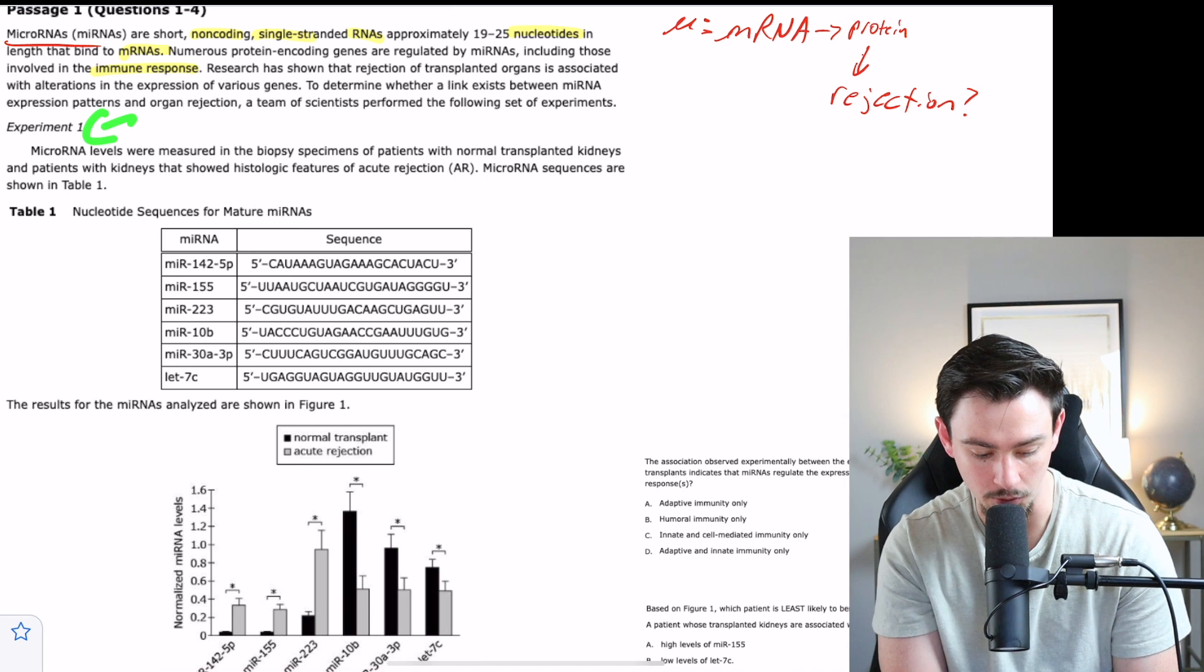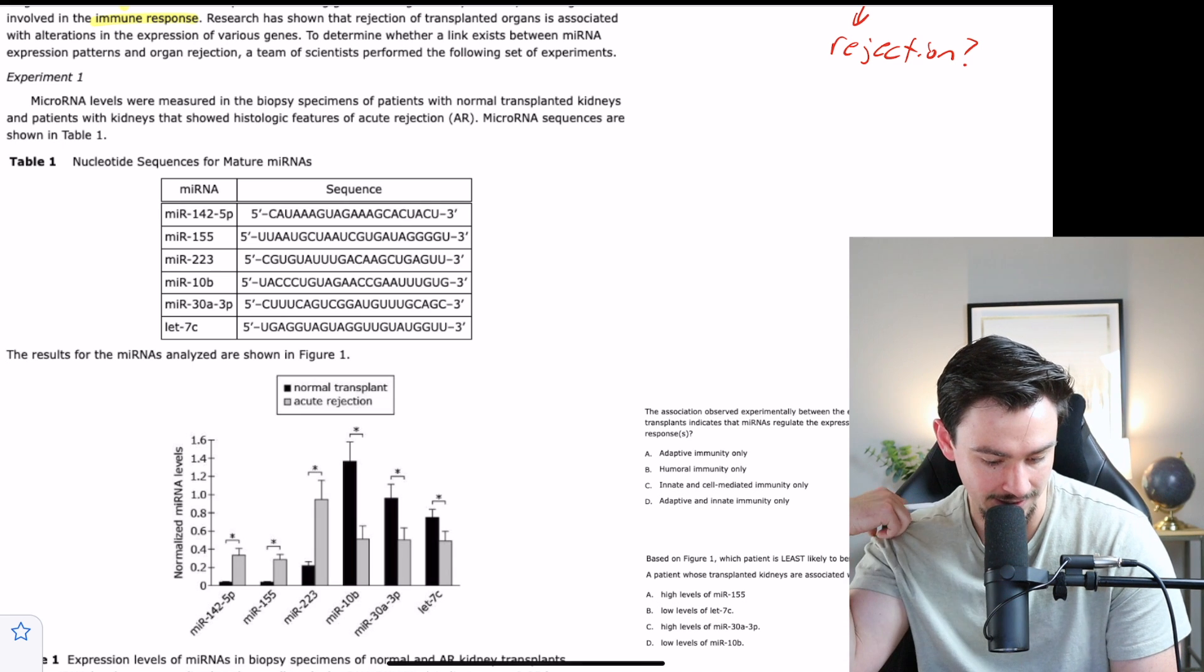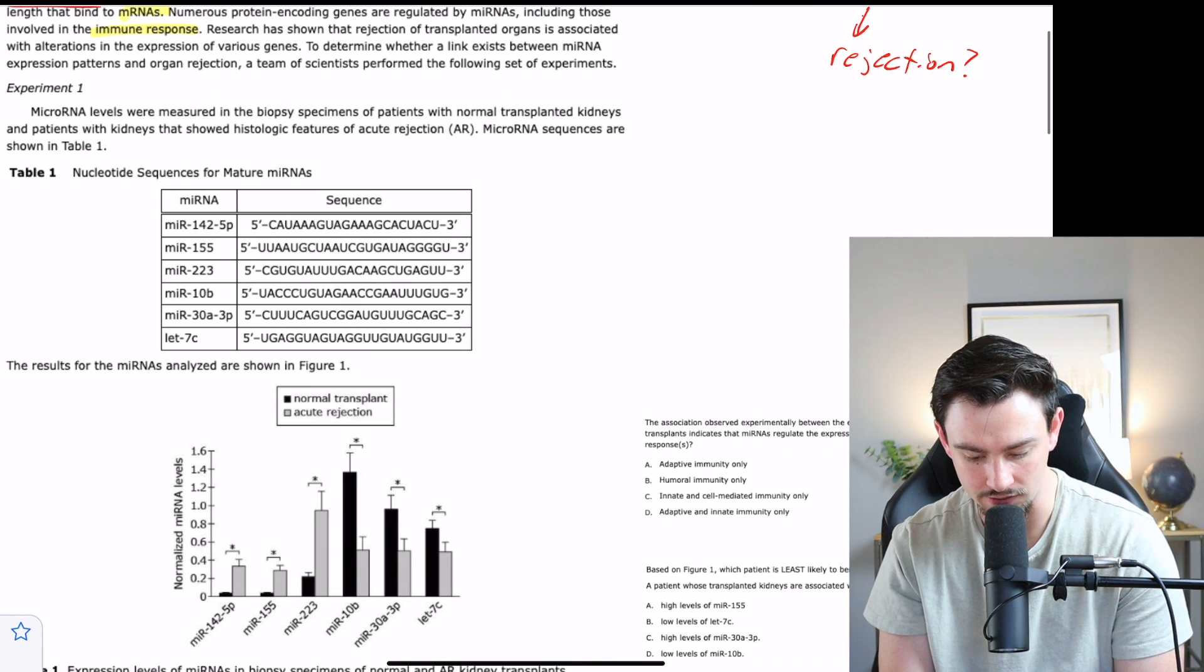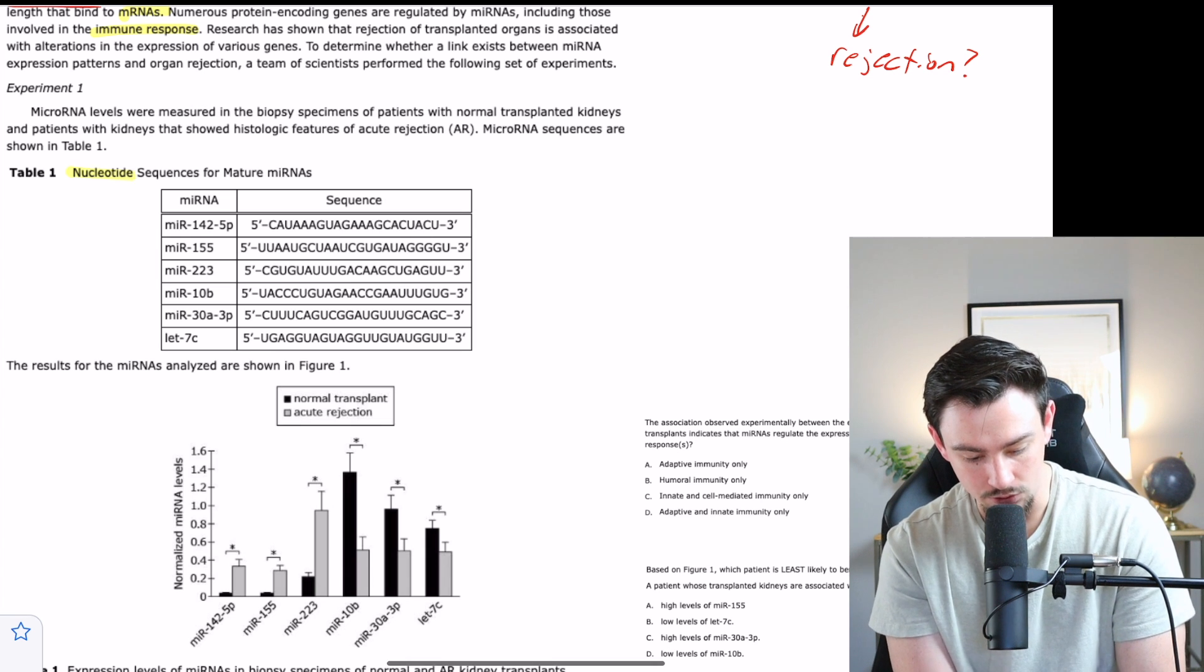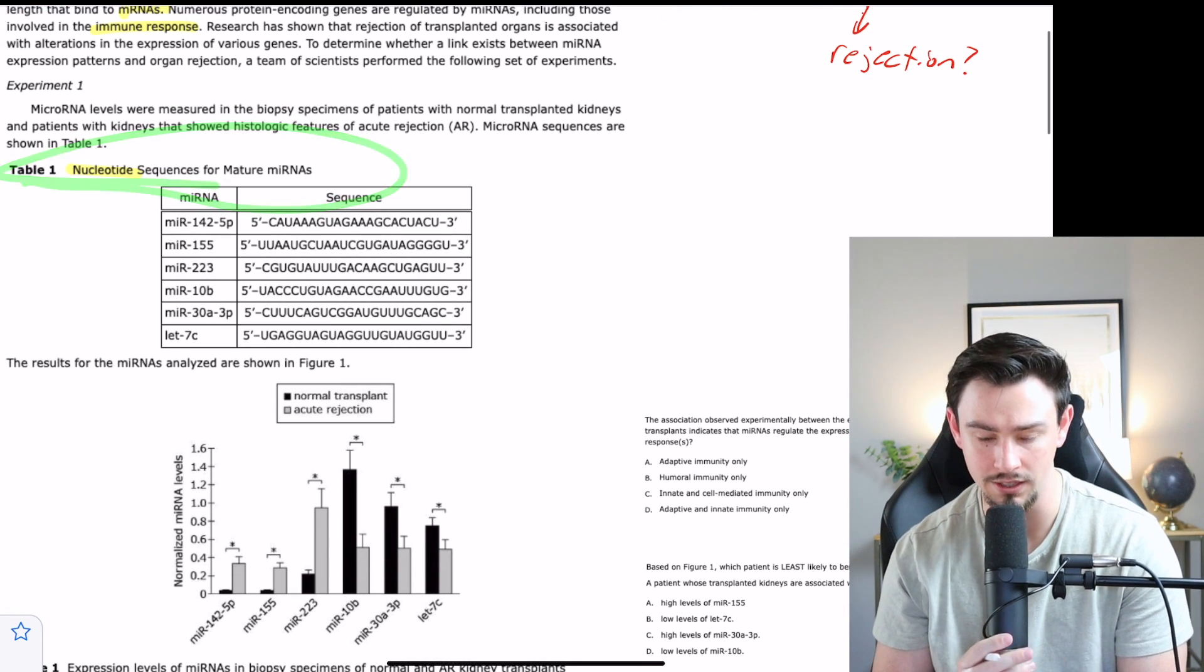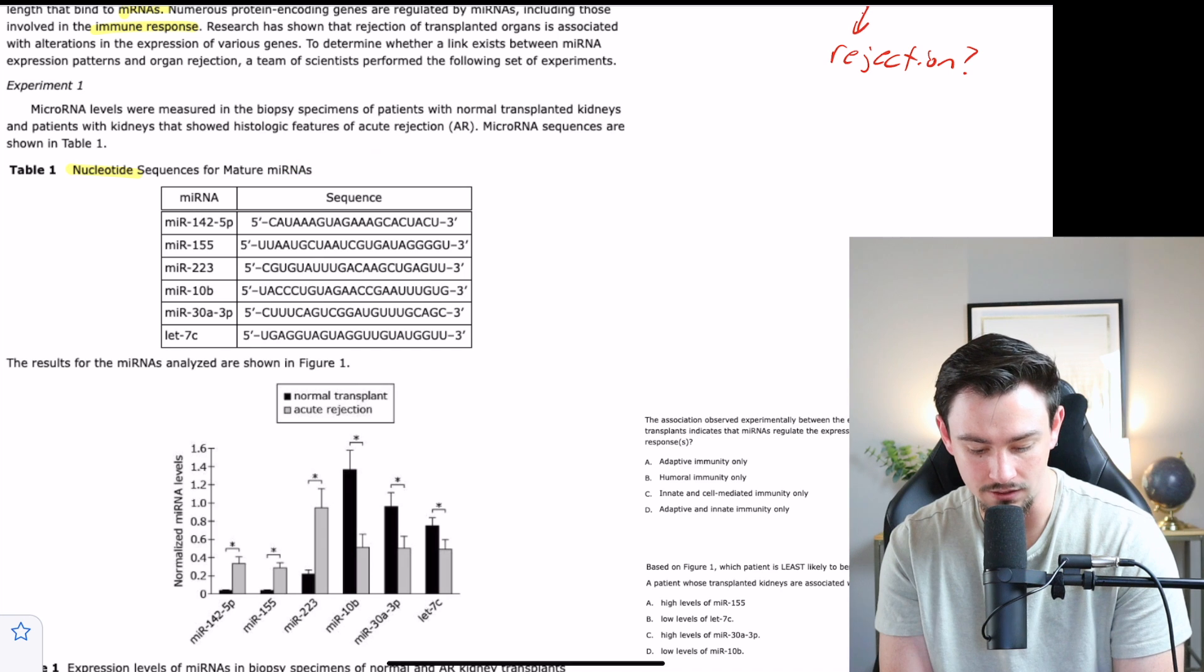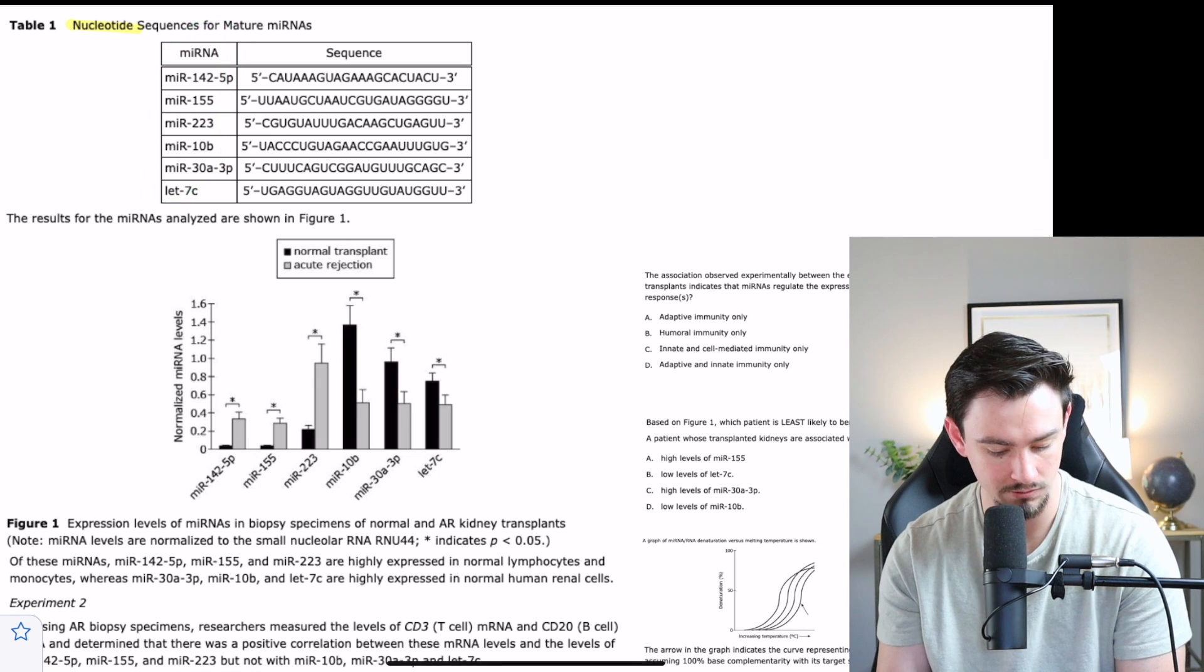To determine whether a link exists between microRNA expression patterns and organ rejection, a team of scientists performed the following set of experiments. Experiment one says microRNA levels were measured at the biopsy specimens of patients with normal transplanted kidneys and patients with kidneys that showed histological features of acute rejection. These sequences are shown in table one. Table one shows nucleotide sequences associated with different microRNAs.